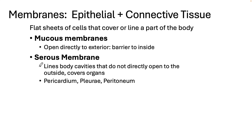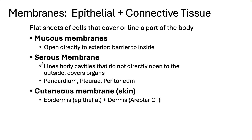In contrast, serous membranes cover cavities that do not directly open to the exterior — they line body cavities in the trunk, with each membrane named based on what it covers: the pericardium surrounds the heart, the pleura covers each lung, and the peritoneum surrounds the abdominal cavity. The cutaneous membrane covers the entire body — this is your skin. It consists of a thick protective layer of stratified squamous epithelium and an underlayer of areolar connective tissue, and is generally dry and waterproof.